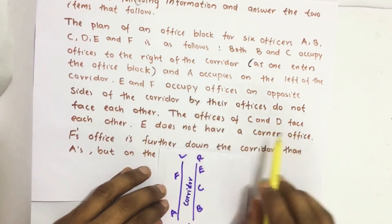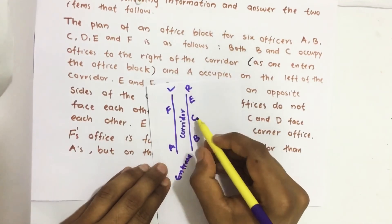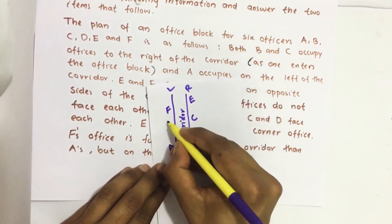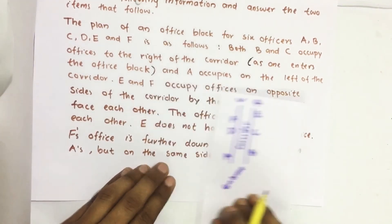Then offices of C and D face each other. Suppose we know C is here, so D should be directly opposite to this.